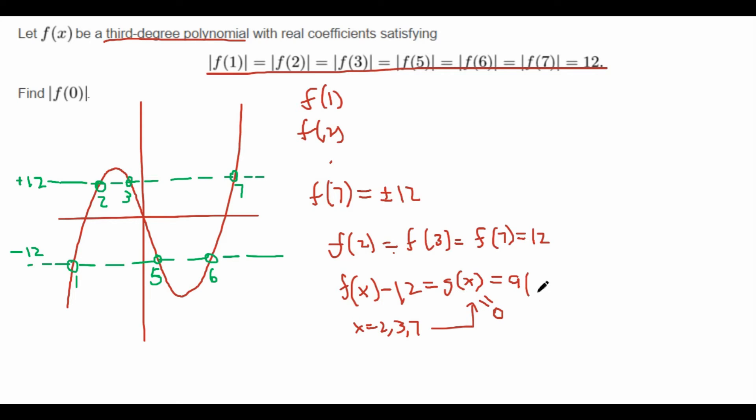And it is, of course, first a leading coefficient a times (x - 2)(x - 3)(x - 7). Therefore, f(x) = a(x - 2)(x - 3)(x - 7) + 12.